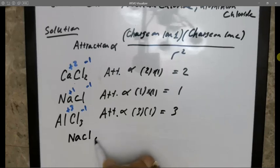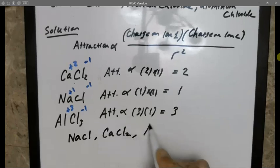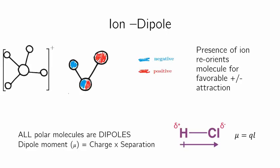So that hopefully was fairly simple. Let's move on to the other type of ionic attraction or intermolecular force, and that's what happens when I have an ion in something that's not an ion.